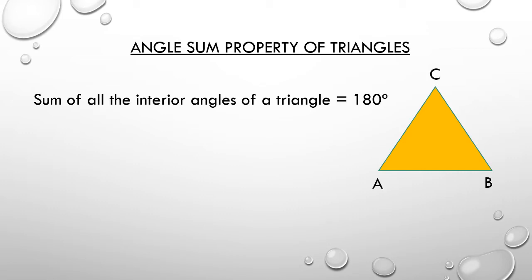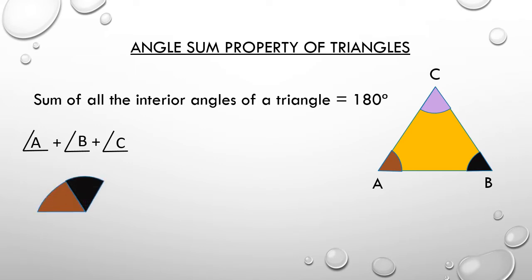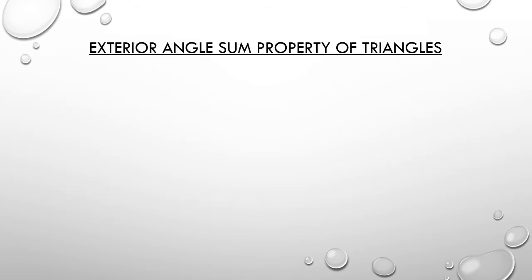Take a compass and draw a small arc to mark angle A, color it. Then mark angle B, color it like this, and angle C — color it with the same radius, draw an arc and color the angles. Then cut the angles and paste them together: angle A plus angle B plus angle C. You will get a semicircle. We know that the angle of a semicircle is equal to 180 degrees. Hence, angle A plus angle B plus angle C equals 180 degrees — hence the proof.